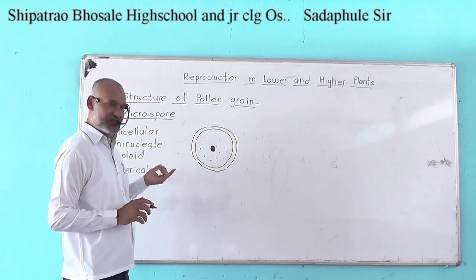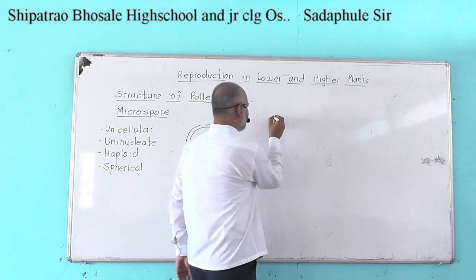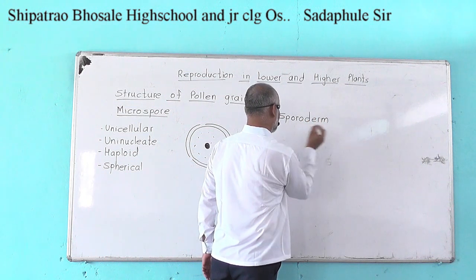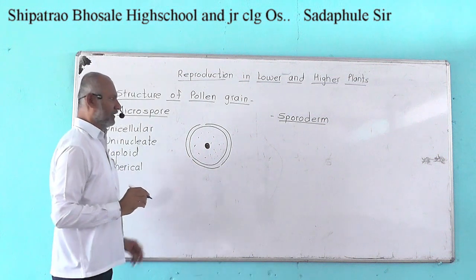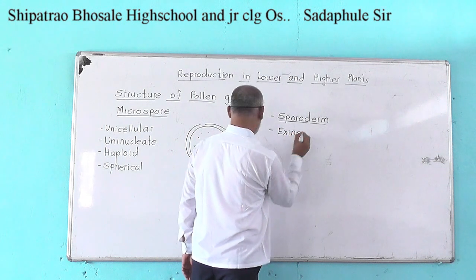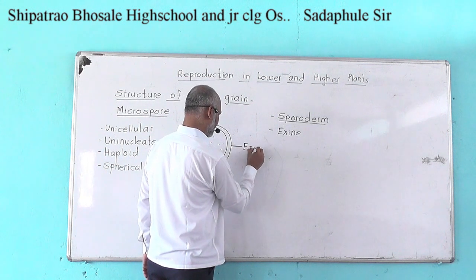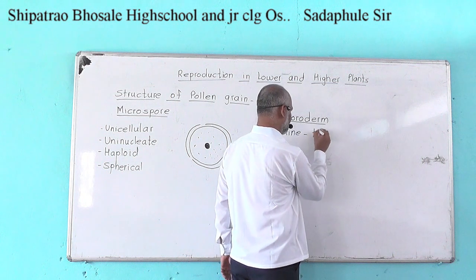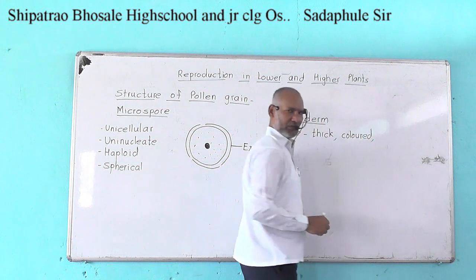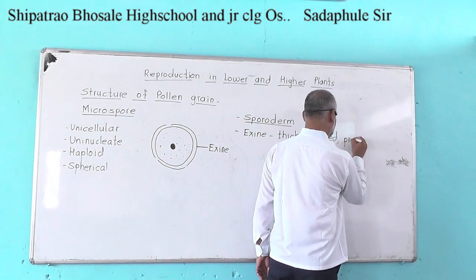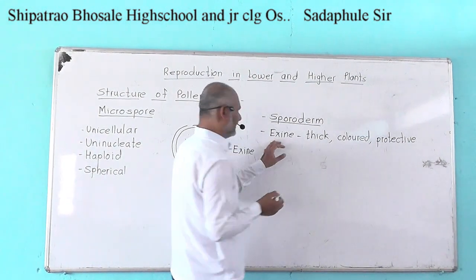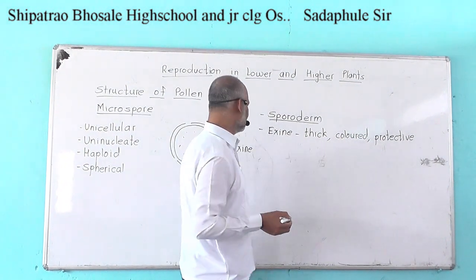This pollen grain is covered by a two-layered membrane termed as sporoderm. The sporoderm includes two layers: the outer layer is termed as exine. The exine is thick, may be colored, and is protective in function — it is the outer, thick, colored, and protective layer.